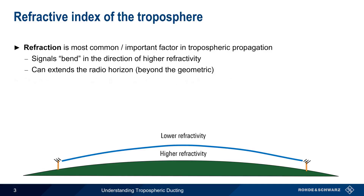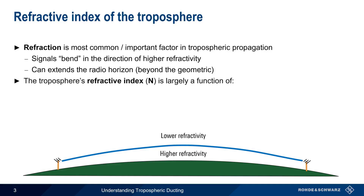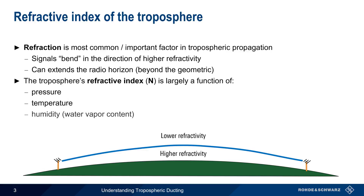The amount of bending in the troposphere is quantified in terms of the refractive index n. This is normally frequency-independent at VHF, and is a function of three atmospheric factors: pressure, temperature, and humidity or water vapor content.